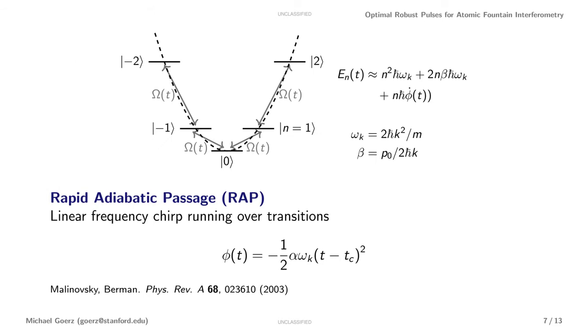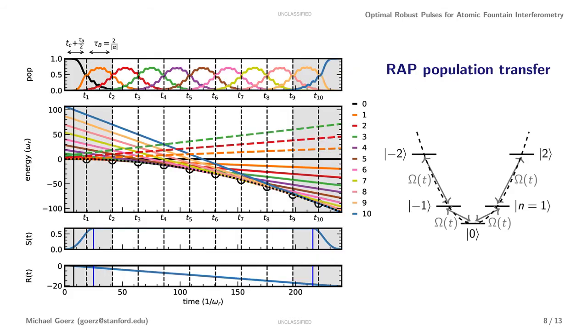An alternative to using Rabi pulses is rapid adiabatic passage. There, to move along this momentum ladder, you leave the amplitude constant and linearly chirp the frequency with a chirped alpha to sweep over the different transitions. This way, if we plot the energy levels over time, we see neighboring levels being tuned into resonance at regular intervals. This means that the population smoothly climbs up the ladder.